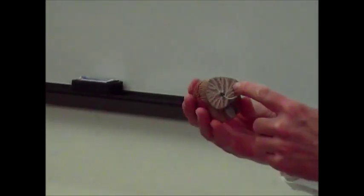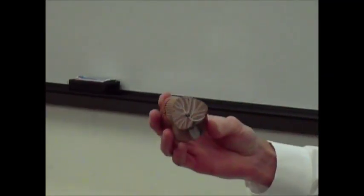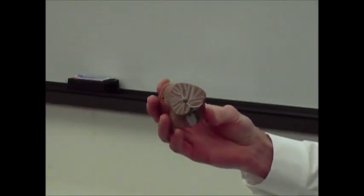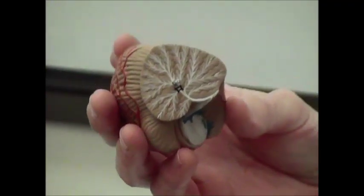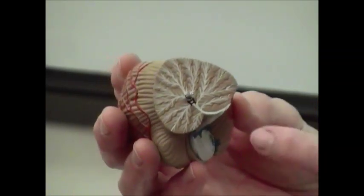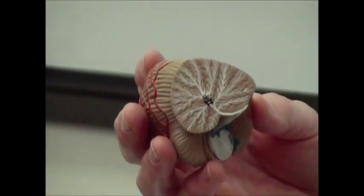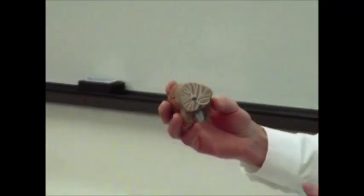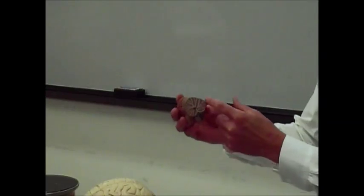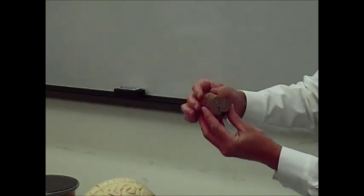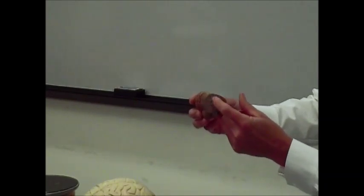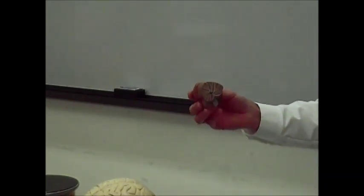If you open up the cerebellum and split it in half, the first thing you'll see is what looks like a tree or bush — the white structure known as the arbor vitae, which literally translates to 'tree of life.' This is white matter, made of myelinated axons running through the cerebellum. The brown part is your gray matter, called the cerebellar cortex, and the white part is the cerebellar medulla, which is the arbor vitae.